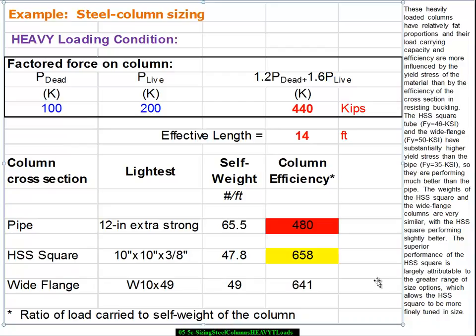And so yield of the material is more crucial generally than buckling. And as a consequence the materials with a higher yield stress are performing better. The wide flanges are about 50 KSI. HSS squared is 46 KSI.